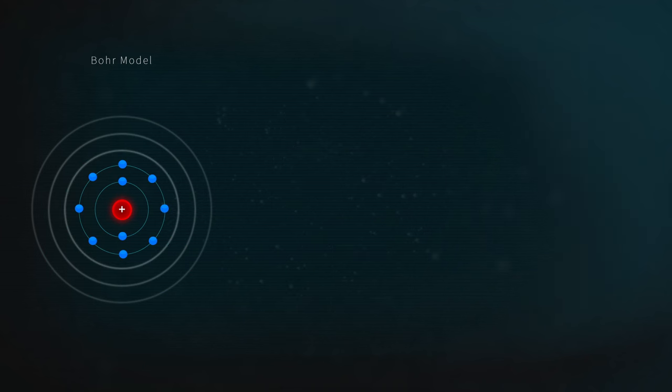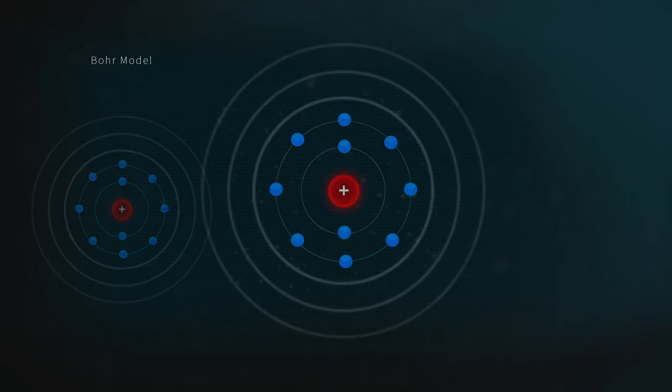The models that try to show the atom aren't very accurate. The 100-year-old Bohr model is easy to draw, but electrons aren't really particles in rings around the nucleus.